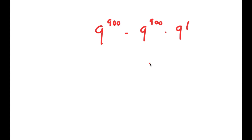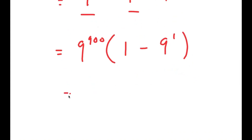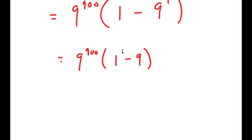Now these two terms both contain 9 to the power of 900, so I'm going to factor out 9 to the power of 900, which is what I said I was going to do at the beginning of the video. So I get 9 to the power of 900 times 1 minus 9 to the power of 1, which equals 9 to the power of 900 times 1 minus 9. Since 1 minus 9 is negative 8, I get 9 to the power of 900 times negative 8.